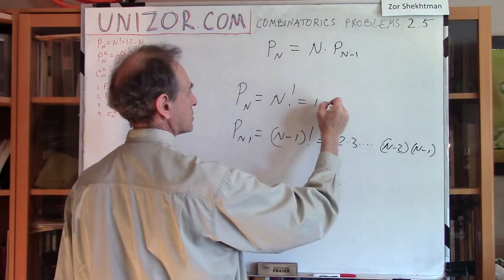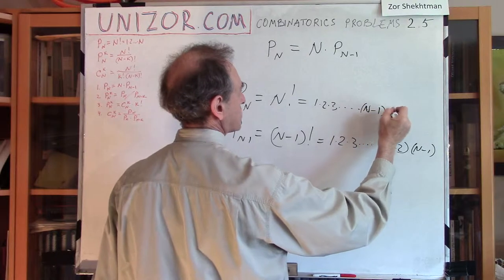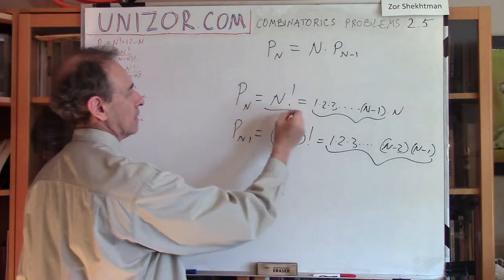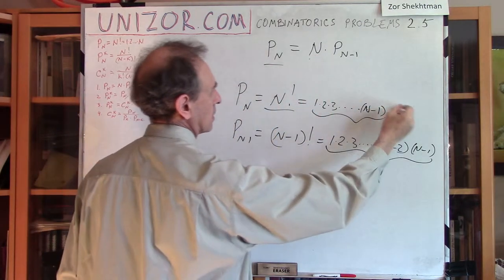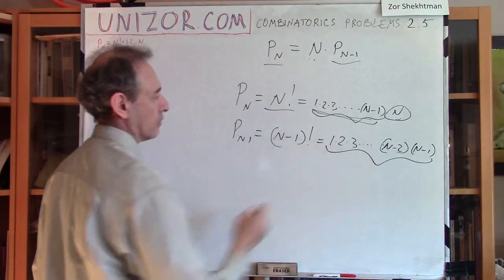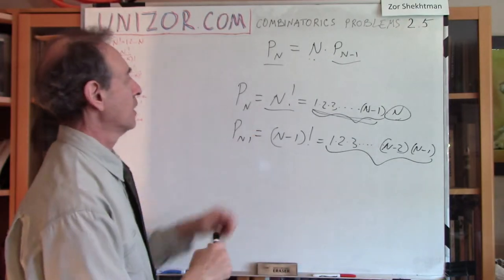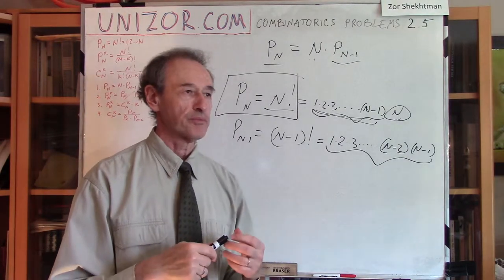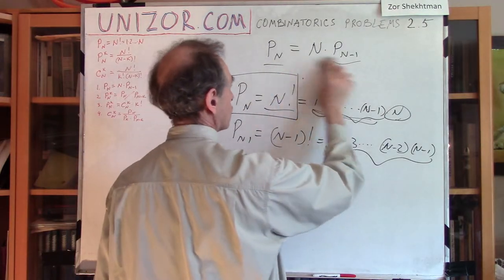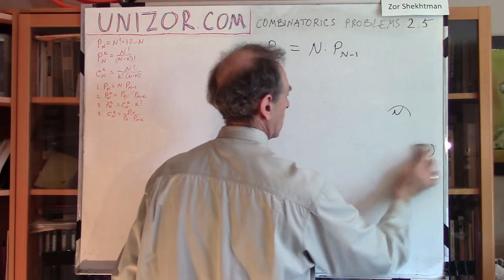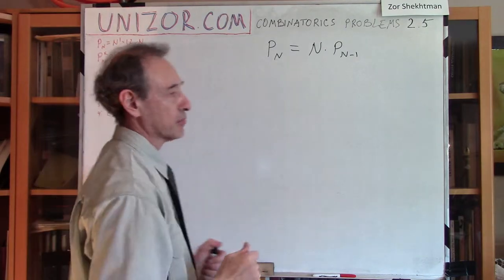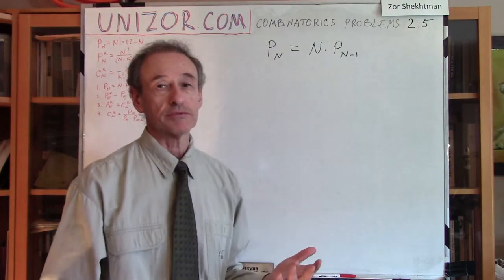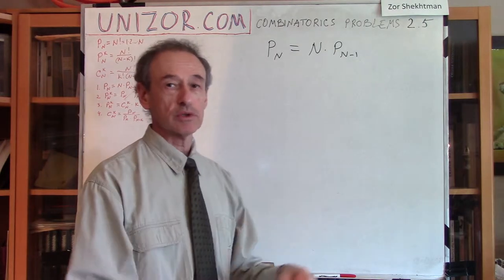So n factorial equals n multiplied by (n-1) factorial. Is this a proof? Well, it is a proof if you know the formula for the number of permutations. But I would like you to come up with this formula logically, because if you do, then the formula that the number of permutations of n objects equals n factorial comes naturally — because this is basically a recursive equation.